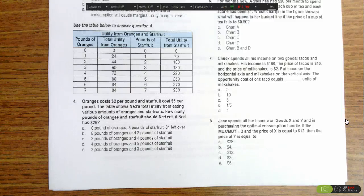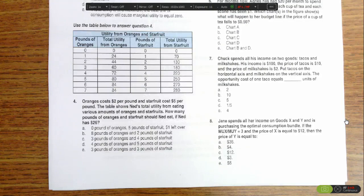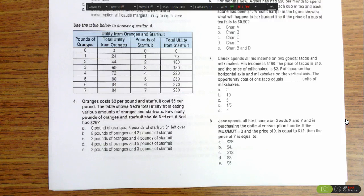This question is asking us to identify the utility maximizing combination of oranges and star fruit if Ned has $26, and oranges are $2 a piece and star fruit are $5. So what we need to do is figure out the marginal utility per dollar spent.